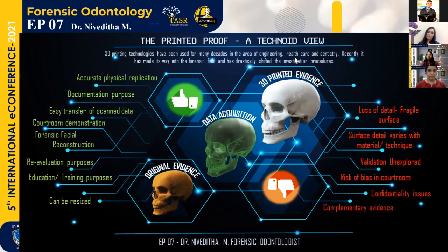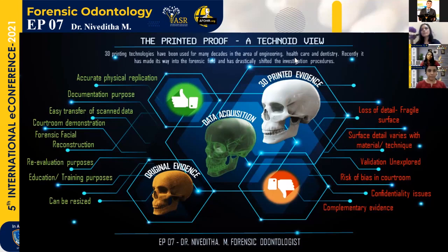Let's see about the main advantages and limitations of 3D printing. The first primary advantage is that it creates an accurate physical replication of the original evidence. The second one is that it is used for documentation purposes or storage purposes, because human remains can get degraded very easily while a 3D printed model can stay for a longer period of time. The third one is that it can be easily transferred due to its digitization.